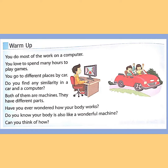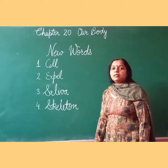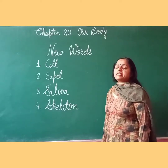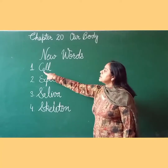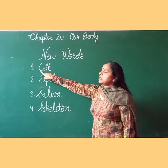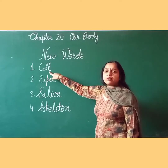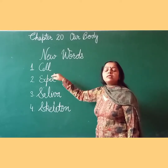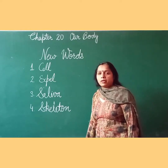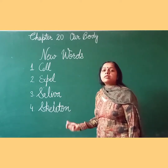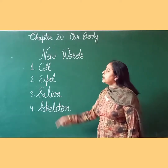It is made of small parts, and each part is one of the main parts. Now let's learn these things in our chapter. These are the new words of this chapter. The first word is Cell.